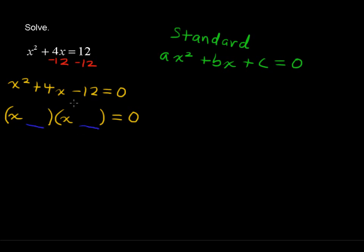Now here, we need two numbers such that they multiply to give you negative 12 and add to give you positive 4. What are some factors of negative 12? 3 times negative 4, 4 times negative 3. But if you add those, you don't get positive 4. 2 times negative 6.